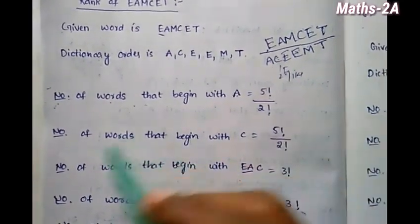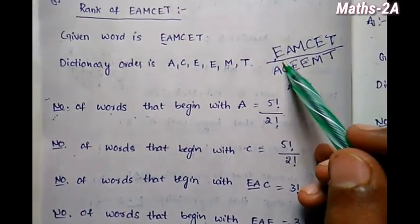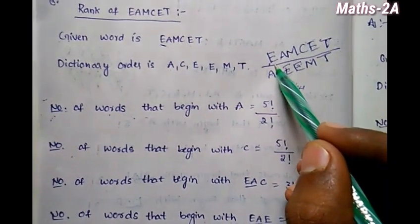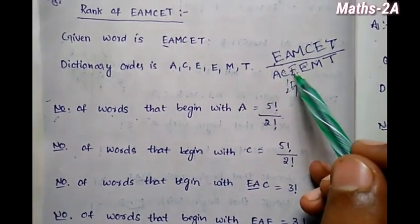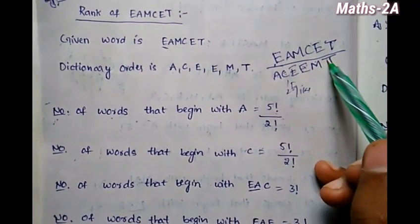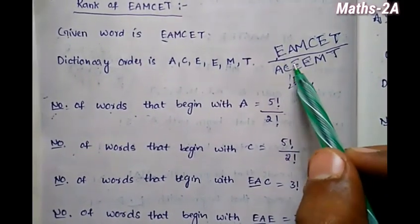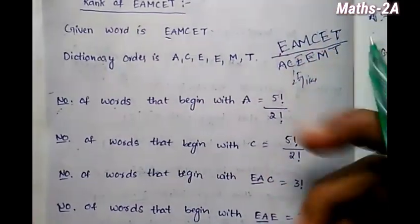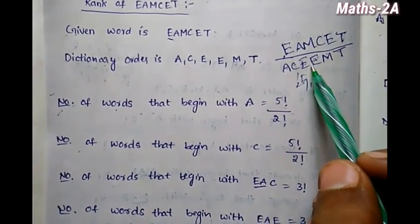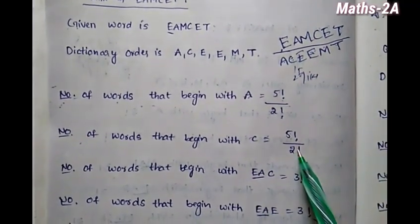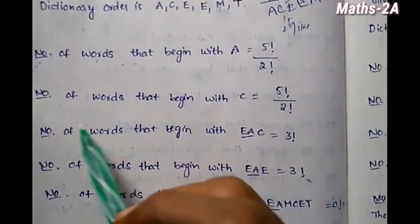Next letter is C. Number of words that begin with C — if C is fixed as the first letter and cancelled, we have five letters remaining. So 5 factorial divided by 2 factorial, because two E's are the same. Divided by 2 factorial, so that gives 60 words beginning with C.